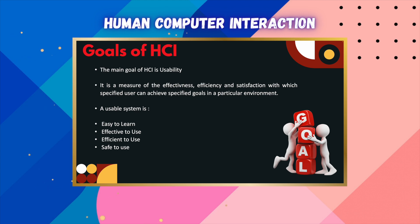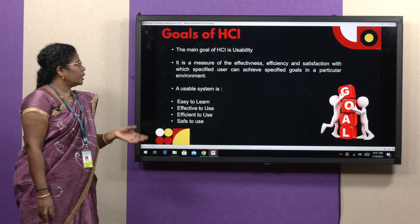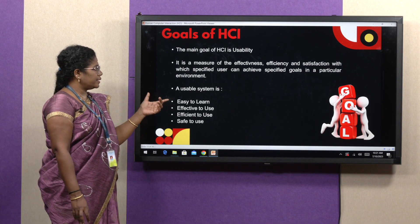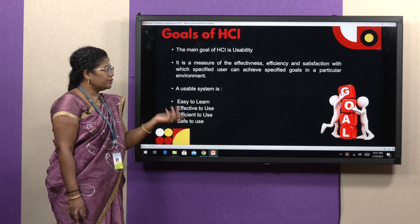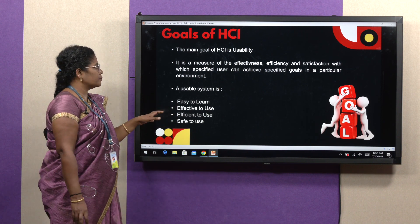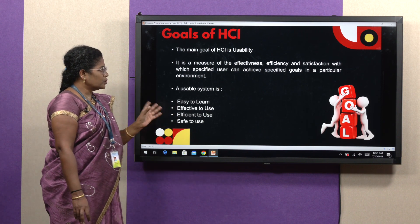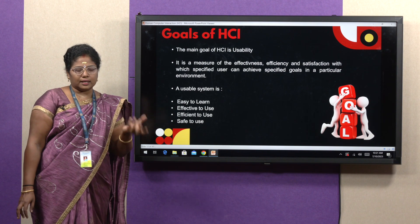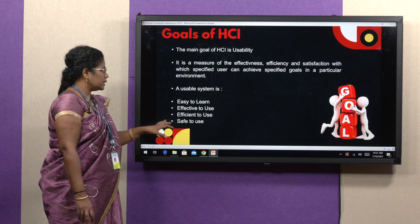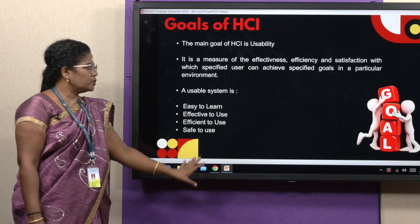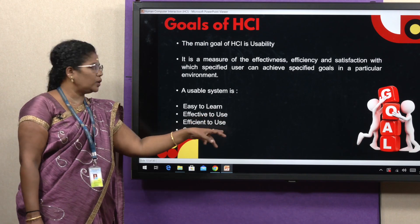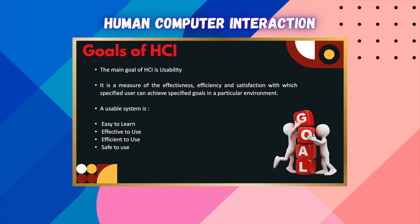The main goals of HCI are to increase the effectiveness, efficiency, and satisfaction with which users can achieve specified goals in a particular environment. A usable system is easy to learn, effective to use, efficient to use, and safe to use.